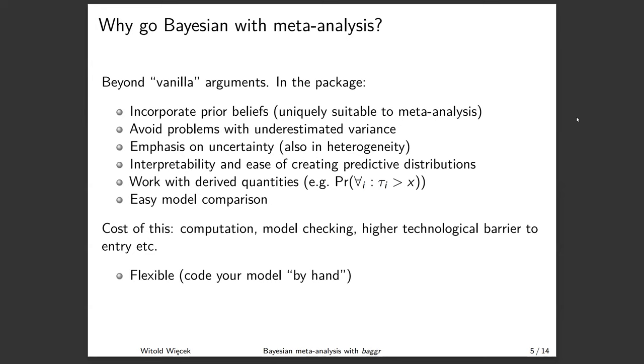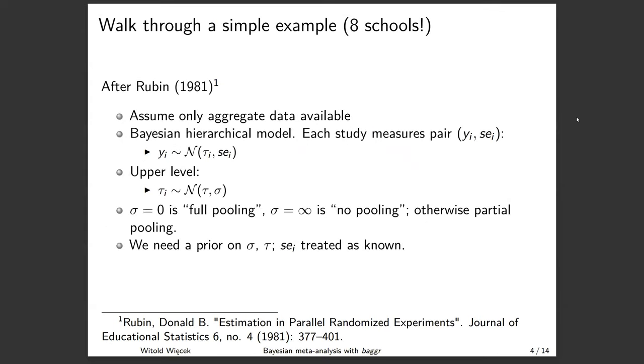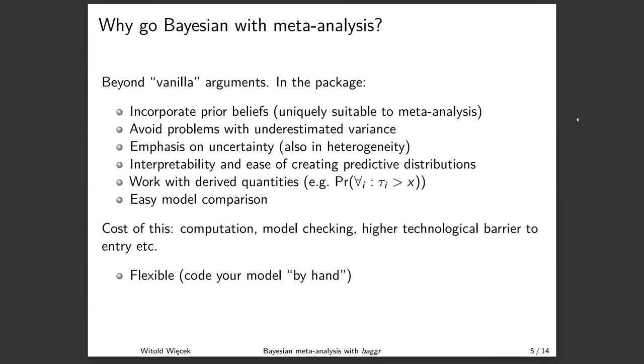The cost of this is, of course, higher technical sophistication, and we should be clear about this. And this is exactly what we're trying to solve here. One last advantage, which is not covered by the package in some sense, is that Bayesian models are much more flexible in terms of meta-analysis models that we can specify. But then one would have to do this by hand.